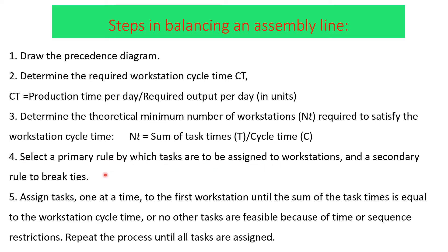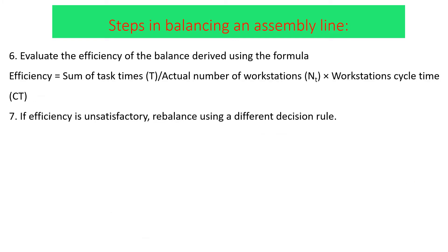The fourth step is to select the primary rule by which tasks are assigned to workstations, and a secondary rule to break ties. The fifth step is to assign tasks one at a time to the first workstation until the sum of task times equals the cycle time or no other tasks are feasible due to time or sequence restrictions; repeat until all tasks are assigned. Step six evaluates efficiency using the formula: efficiency equals sum of task times divided by the actual number of workstations times the workstation cycle time. The last step: if efficiency is unsatisfactory, rebalance using a different decision rule.